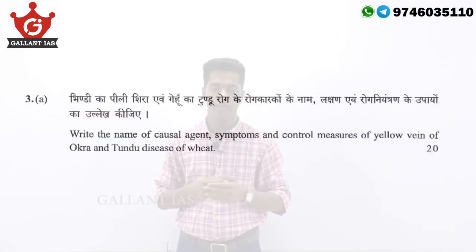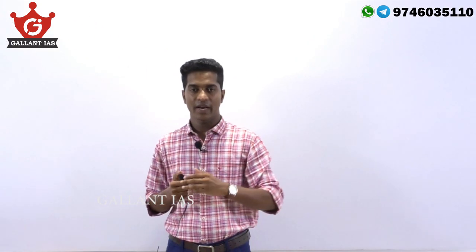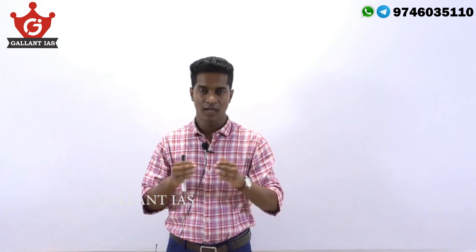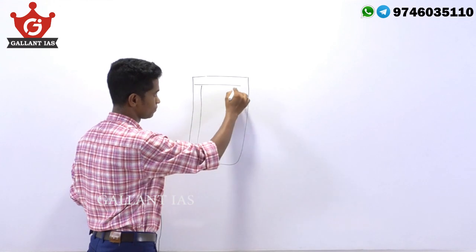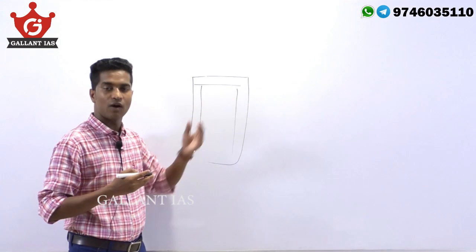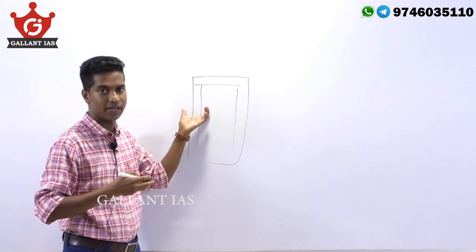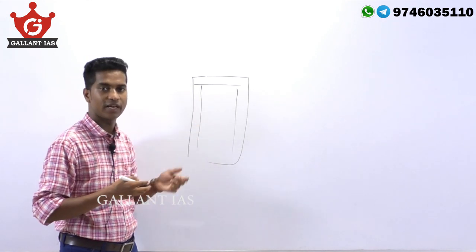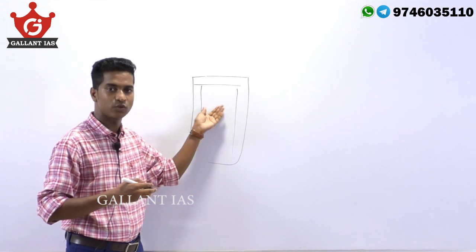To address this, I am picking up a question from the 2019 Civil Service mains exam. The question is: write the causal agent, symptoms and control measures of yellow vein of okra and Tundu disease of wheat. This is a 20-mark question. While you are writing the main exam, you get a question and answer booklet. You get only a specific area to address the question, and for this 20-mark question, you get four sides to answer.